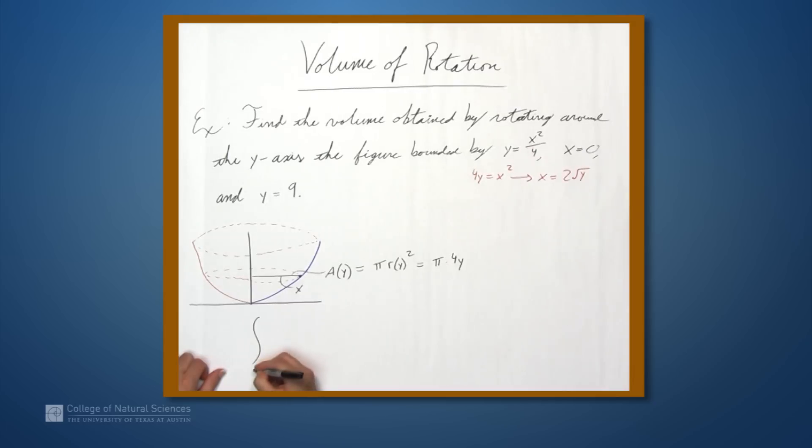So we're going to integrate from 0 to 9, a of y dy. So 4 pi y dy.